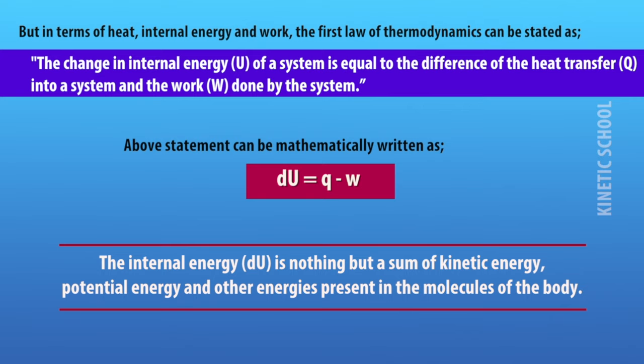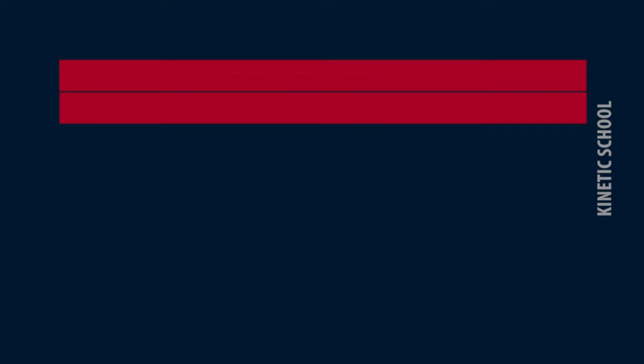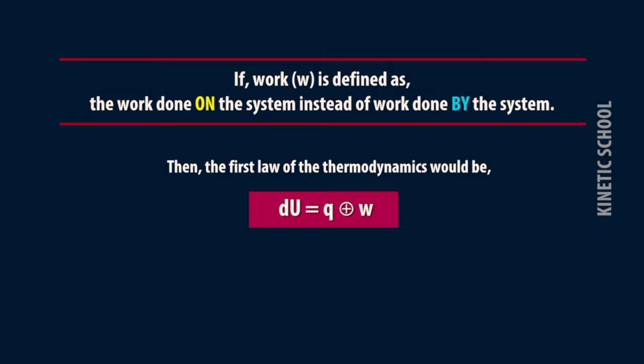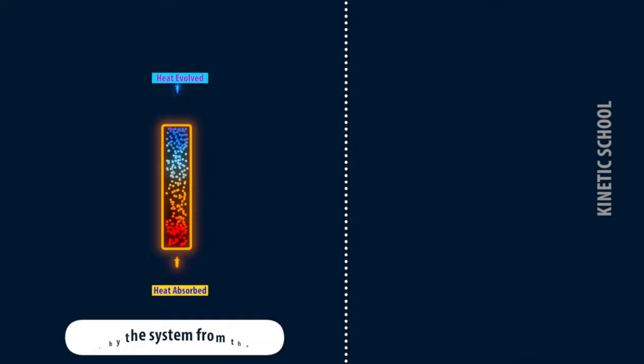The internal energy is the sum of kinetic energy, potential energy, and other energies present in the molecules of the body. If work is defined as the work done on the system instead of work done by the system, then the first law of thermodynamics would be ΔU = Q + W.